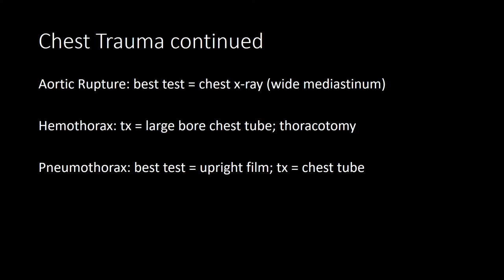Pneumothorax presents with shortness of breath and chest pain, best seen on an upright expiratory chest film. If large enough, place a chest tube. Chest tubes for pneumothorax are placed anteriorly; for hemothorax they are placed posteriorly. Tension pneumothorax presents with decreased breath sounds, distended neck veins, and tracheal deviation. Treatment is immediate needle thoracostomy followed by chest tube — do not wait for imaging. This is very high yield.